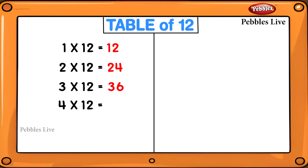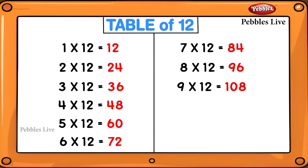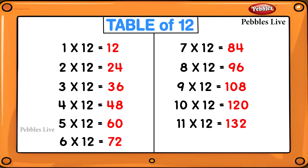1 twelve is 12, 2 twelves are 24, 3 twelves are 36, 4 twelves are 48, 5 twelves are 60, 6 twelves are 72, 7 twelves are 84, 8 twelves are 96, 9 twelves are 108, 10 twelves are 120, 11 twelves are 132, 12 twelves are 144.